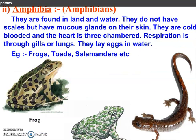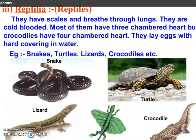Next class is Amphibia. They are found on land as well as in water. They do not have scales but have mucus glands on their skin. They are cold-blooded and their heart is three-chambered. Respiration is through gills. They lay eggs in water. For example, toads, frogs, and salamanders.